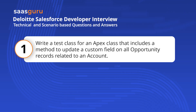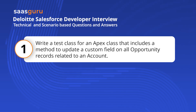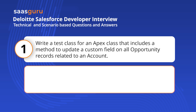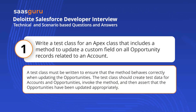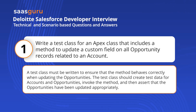Write a test class for an APEX class that includes a method to update a custom field on all opportunity records related to an account. A test class must be written to ensure the method behaves correctly. The test class should create test data for accounts and opportunities, invoke the method, and then assert that the opportunities have been updated appropriately.